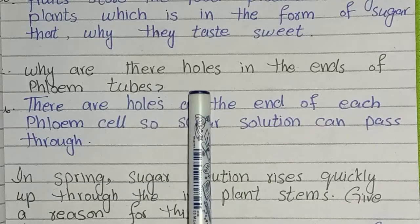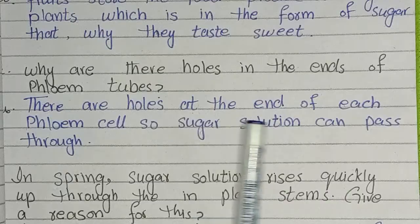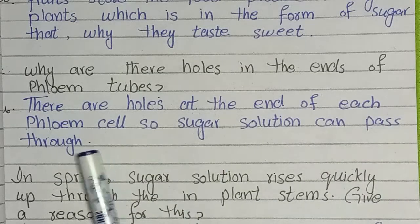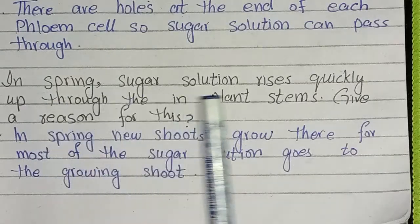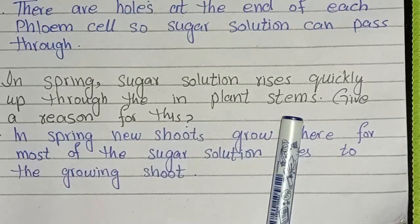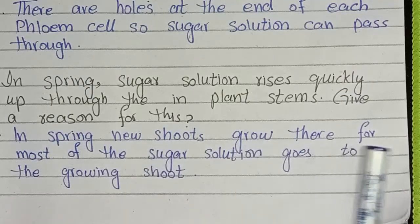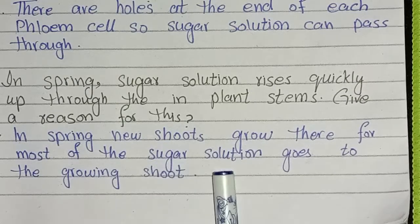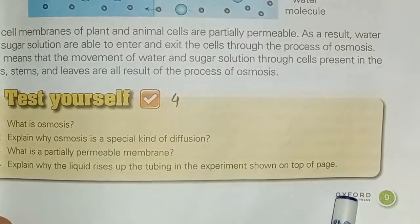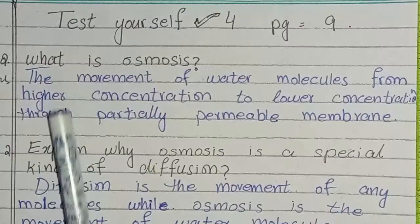Why are there holes in the ends of the phloem tubes? There are holes at the end of each phloem cell so sugar solution can pass through. In spring, sugar solution rises quickly up through the plant stems — give a reason for this: In spring, new shoots grow, therefore most of the sugar solution goes to the growing shoot.